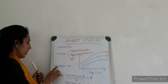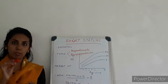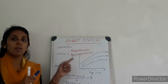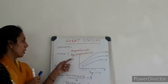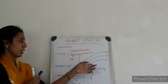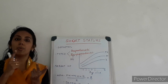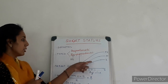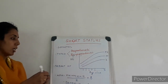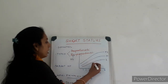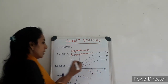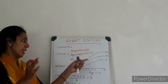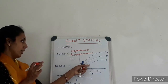Now certain terminologies we have to know to understand the concept. One is the growth chart — as already discussed, the height will be plotted here. We can use a centile chart or we can use a standard deviation chart. Any child whose height is less than the third percentile or less than minus 2 standard deviation is taken to have short stature.